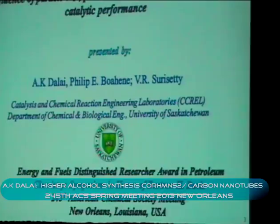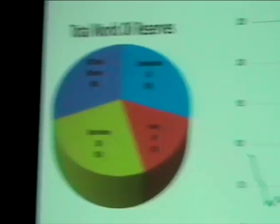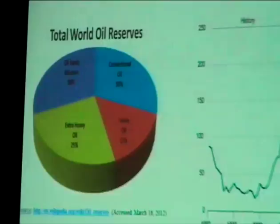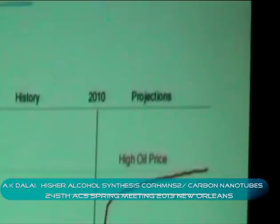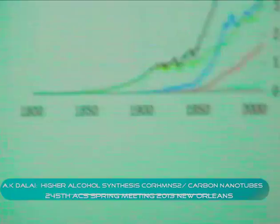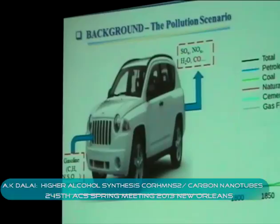Looking at world oil reserves, they are mostly dependent on oil sands and bitumen at 30%, conventional oil 30%, extra heavy oil 25%, and heavy oil 15%. Most research and development work will go into these areas, and it's a very energy-intensive process with significant pollution issues associated with it. The slide on the right shows total metric tons of carbon emitted per year — in billions — mostly emitted by petroleum, coal, and natural gas industries.